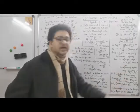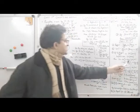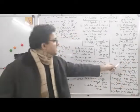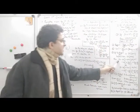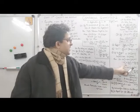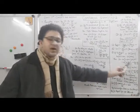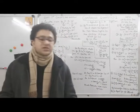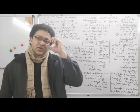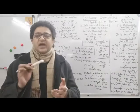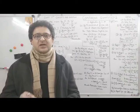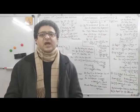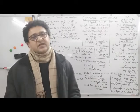Let's take another example. If the gain is 8%, then SP = CP × (1 + 8/100) = CP × 108/100. Simplifying 108/100 by dividing by 4 gives 27/25. So SP = CP × 27/25. Similarly, for a loss of 20%, SP = CP × (1 − 20/100) = CP × 80/100. And for a gain of 20%, SP = CP × 120/100.